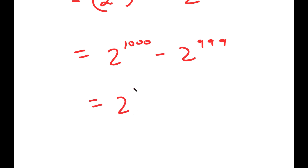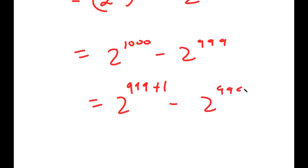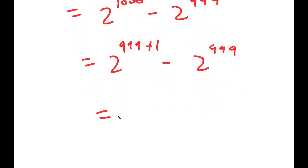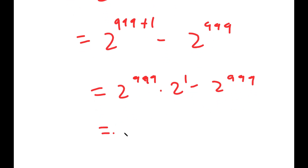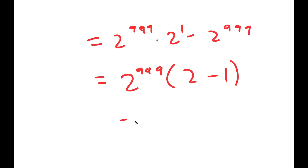Now to solve this, I'm going to write 2 to the power of 1000 as 2 to the power of 999 plus 1. So I get 2 to the power of 999 times 2 to the power of 1, minus 2 to the power of 999, which is equal to 2 to the power of 999 times (2 minus 1), which is equal to 2 to the power of 999.